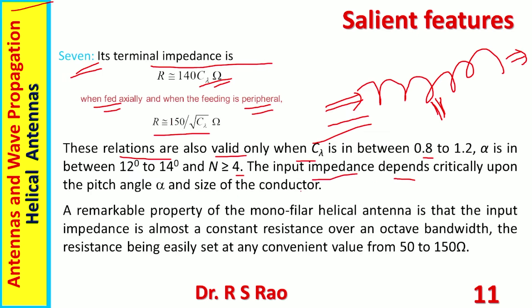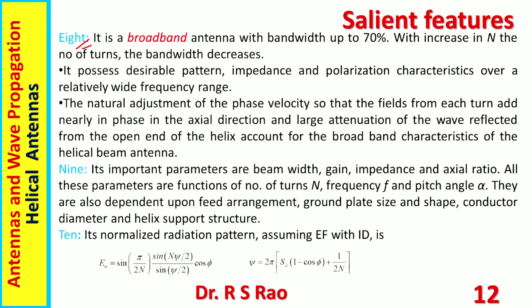The input impedance depends critically upon the pitch angle and the size of the conductor. A remarkable property of the monofilar helical antenna is that input impedance is almost a constant resistance over an active bandwidth, with the resistance easily set at any convenient value from 50 to 150 ohms. An important feature is that it is a broadband antenna — not surprising because it is a traveling wave, non-resonant antenna. Non-resonant antennas are always associated with broadband nature.